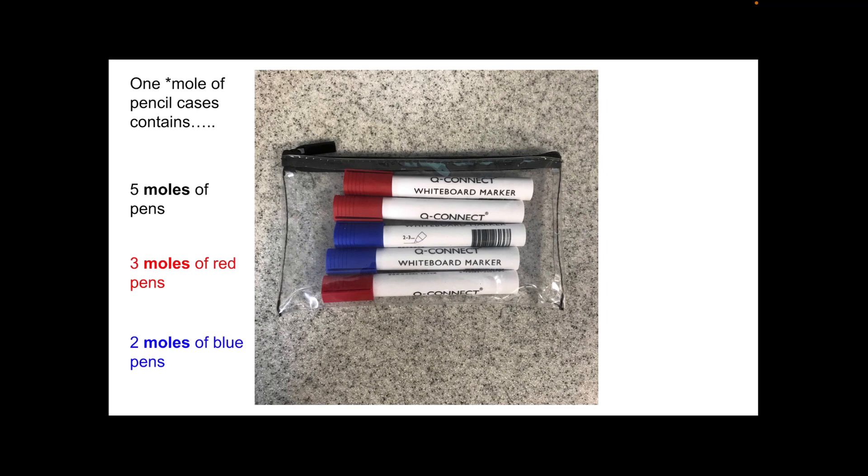So what we're going to do now is work out how many actual pens we've got. So before I go any further, just a reminder: what do we mean by a mole of something? We mean 6.02 times 10 to the 23. Remember that's Avogadro's number and this picture was on the first slide.